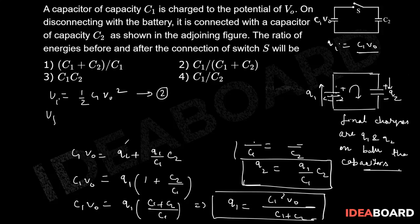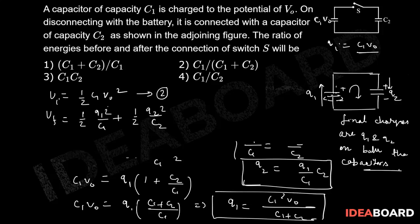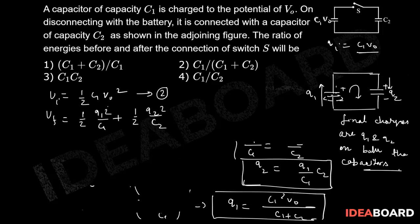The final energy U_final is the total energy stored in both capacitors: U_final = ½·Q1²/C1 + ½·Q2²/C2. The values of Q1 and Q2 are now known. Q2 = (Q1/C1)·C2.